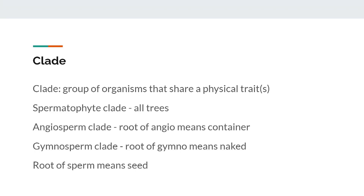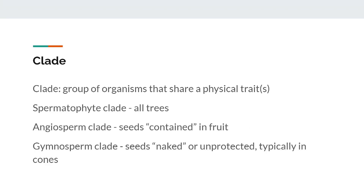Like many fields of biology, there are exceptions to every rule, but the following statements will hold true for most of the trees you deal with. If we examine the etymology of these two words, the root of 'angio' means container, the root of 'gymno' means naked, and the root of 'sperm' means seed. So, all trees in the angiosperm clade produce flowers and fruit, and the seeds are contained in the fruit. For the gymnosperm clade, seeds are naked or unprotected, and those are typically in cones — they are not enclosed or contained as in the angiosperm clade.